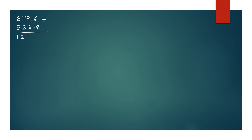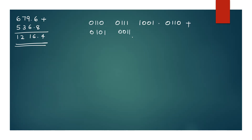Our example is 9.6 plus 536.8. We will now work through this addition. The digits map to BCD groups: 1, 0, 8 into 1, 0, 0, 0.